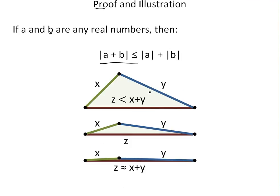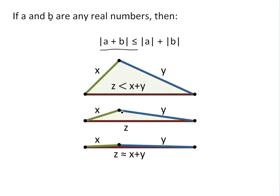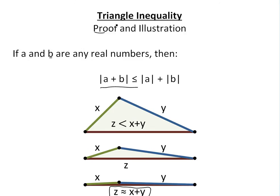Here's a little image showing why it's called the triangle inequality. If you have sides X and Y, the bottom side Z is clearly less than X plus Y — just the way it looks. But as you make the triangle thinner and not as tall, Z becomes approximately equal to X plus Y, and that's basically where the equality comes from.